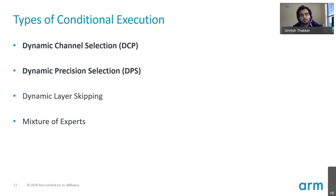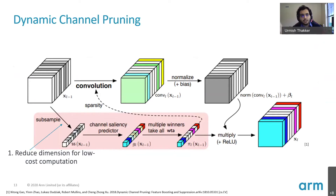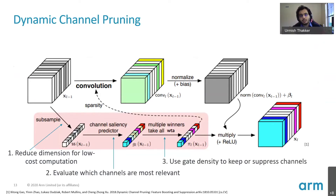Depending on the type of opportunity exploited, there can be multiple classes of conditional execution networks. For this presentation I'll focus on dynamic channel selection and dynamic precision selection. Dynamic channel pruning works by taking the input feature map for every layer, passing it through a very simple predictor network that determines which output channels are important, and then reading in weights only for those important output channels.